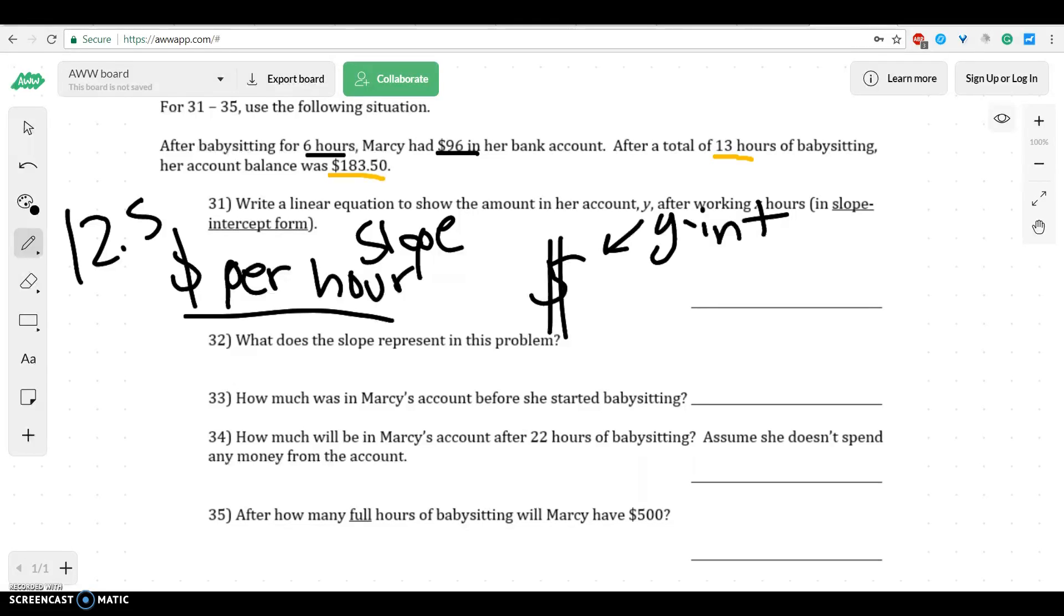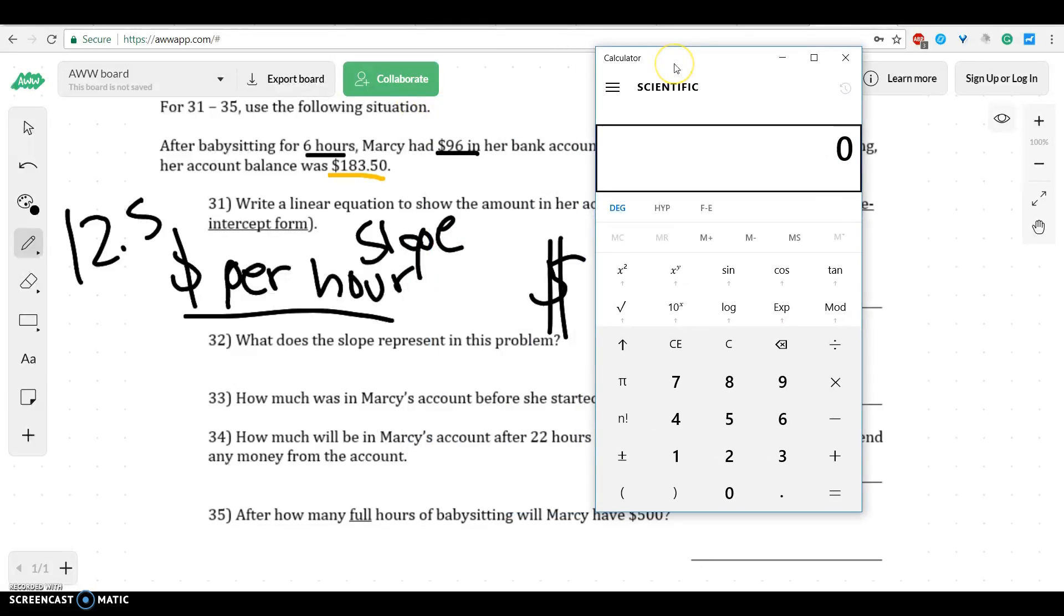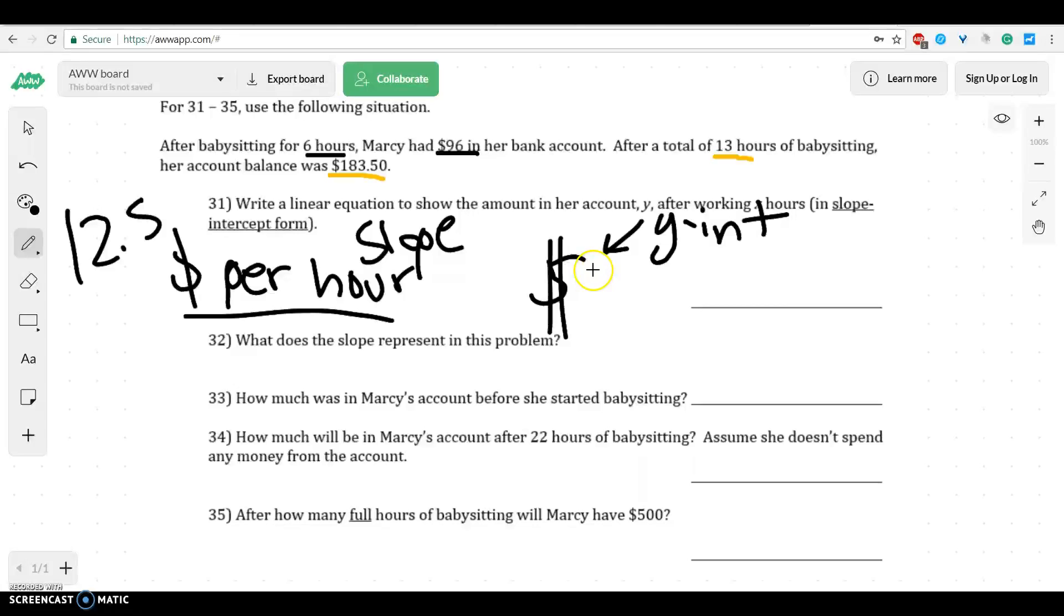Well, if she made $12.50 per hour, let's see how much she should have made after 6 hours. So if she made $12.50 per hour, what I did was I took $12.50 and timesed it by 6, and she should have made $75. But she had $96. So that must mean that she had $21 in her bank account to start with.